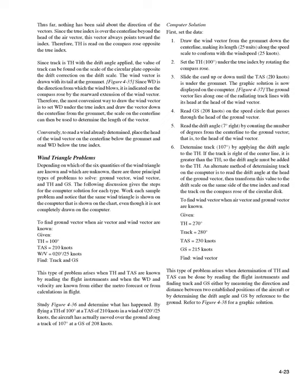The graphic solution is now displayed on the computer. Figure 4-37. The ground vector lies along one of the radiating track lines with its head at the head of the wind vector. 4. Read GS — 208 knots — on the speed circle that passes through the head of the ground vector. 5. Read the drift angle — 7° right — by counting the degrees from the center line to the ground vector. 6. Determine track — 107° — by applying the drift angle to the TH. If the track is right of the center line, the drift angle is added to the TH.